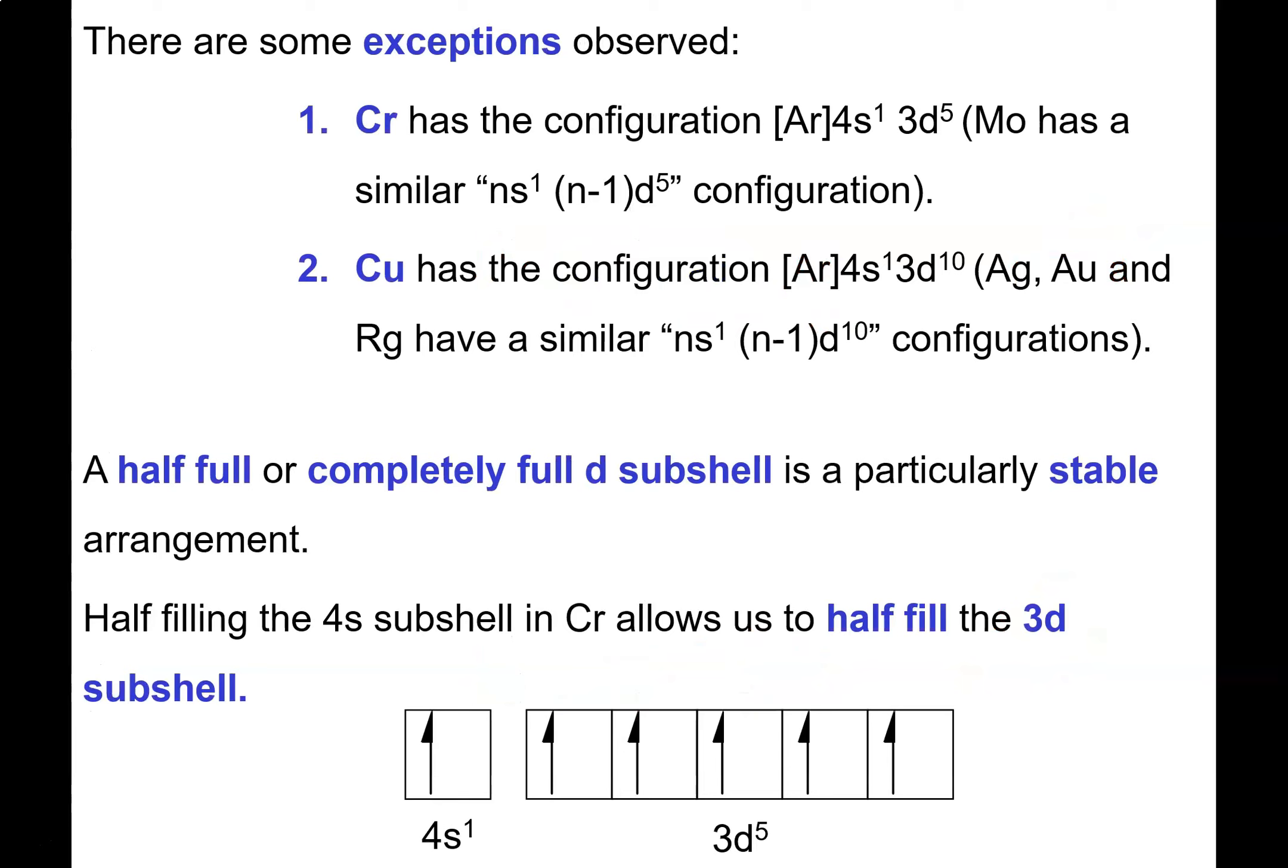There are these two exceptions in period 4, and we do need to know them. Chromium has the electron configuration 4S1 3D5, and it's also worth noting that molybdenum, immediately underneath chromium, also has a similar NS1 N-1 D5 configuration - this is 4S1 4D5 for molybdenum.